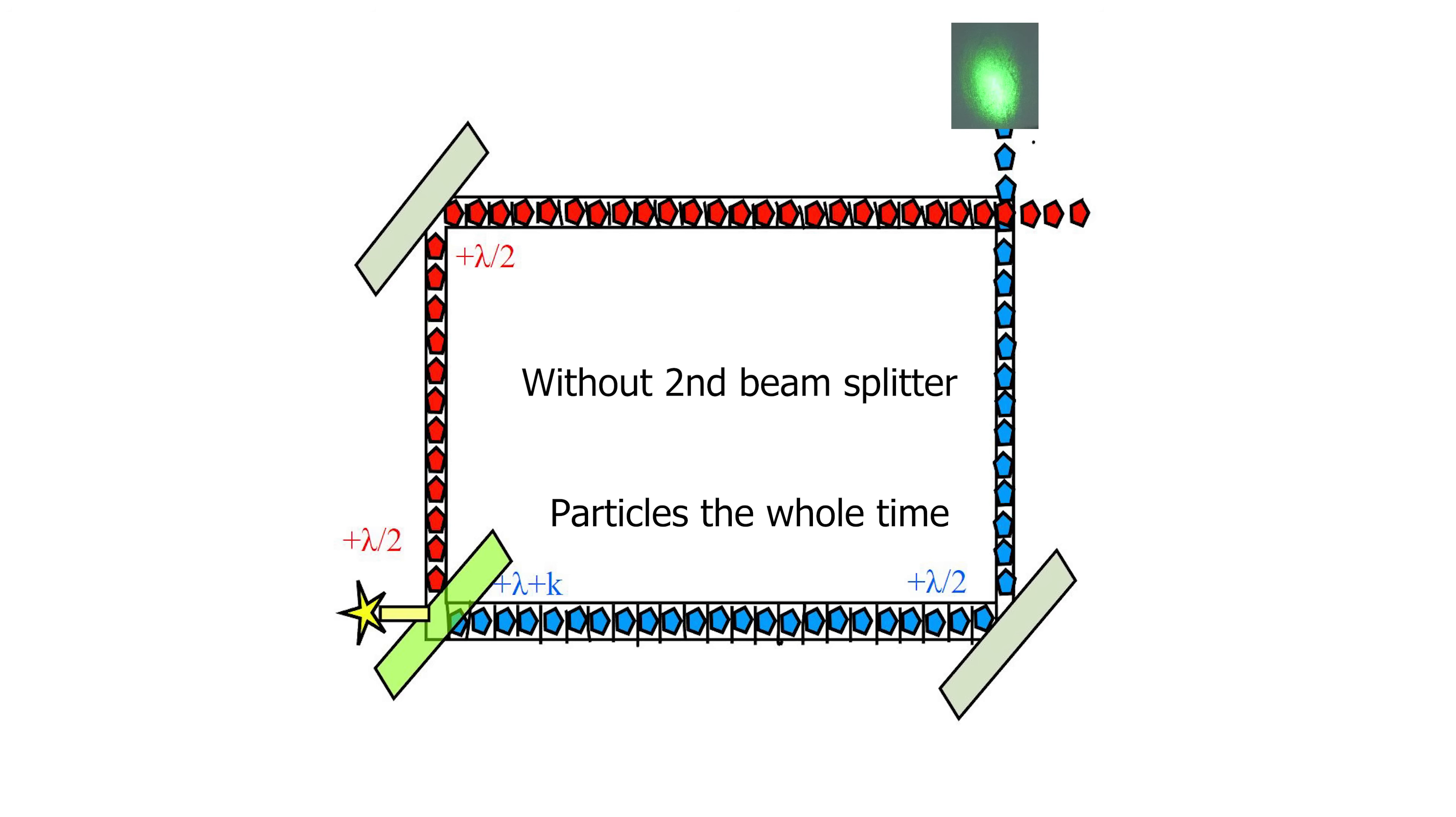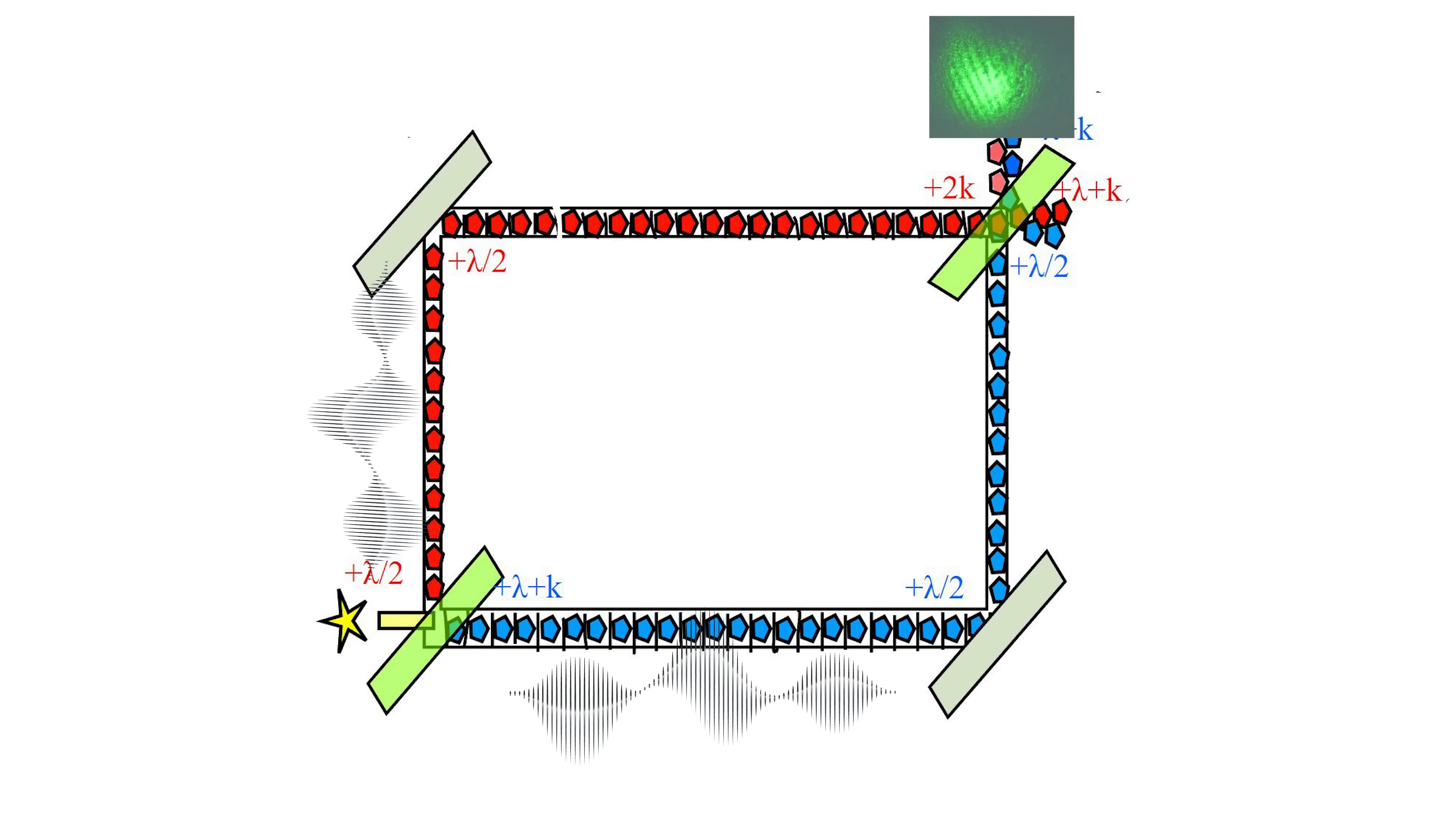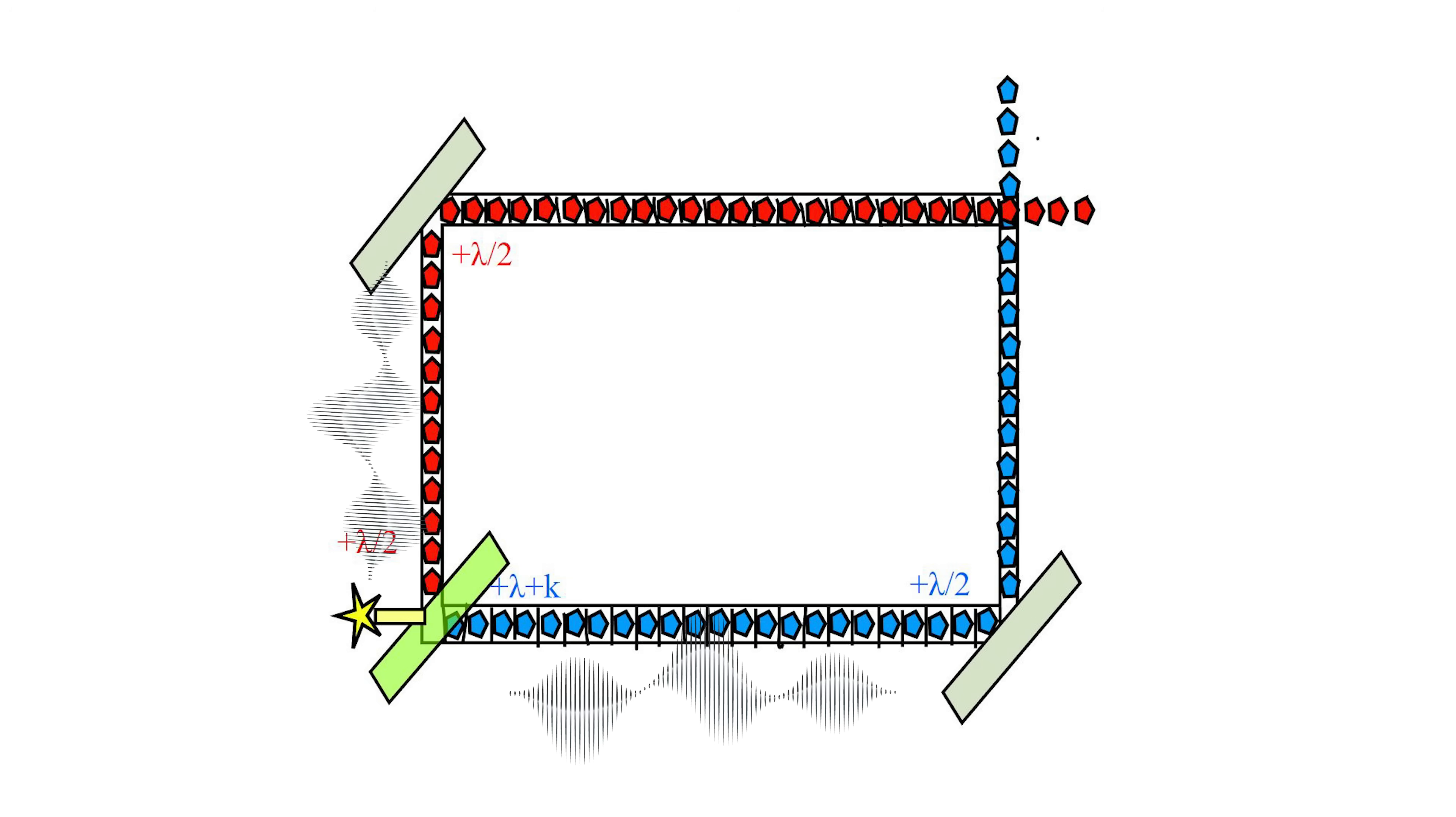So I guess we can accept that, but now let's get a little bit tricky. Let's say that we have the two beam splitters in place so that each individual photon is traveling as a wave that gets split up at the first beam splitter. But then mid-flight, we remove the second beam splitter. What will we detect at these two points?